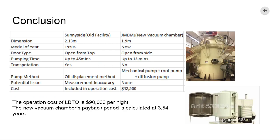Our team decided to install a new vacuum chamber — the JMDMJ model — on Mt. Graham. It has several advantages compared to the old facility at Sunnyside. Since the new vacuum chamber is open from the side, it reduces the risk of lifting the mirror in from the top. The efficiency has been improved 3.5 times faster than the old facility, because the new vacuum chamber uses a mechanical pump, root pump, and diffusion pump rather than the oil displacement method. With the new facility on Mt. Graham, there is no transportation needed for the mirror.